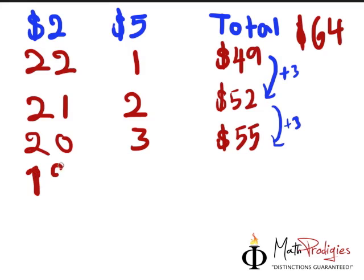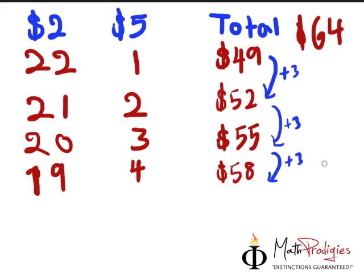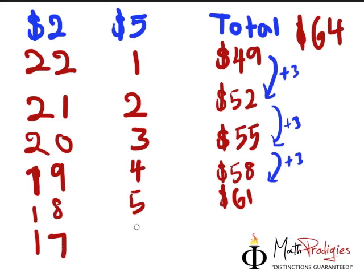So we have 19 $2-notes which gives you $38, and we have 4 $5-notes which gives us $20. So 38 plus 20 gives you $58. Let's check our pattern — yes, it is right, plus 3. So from now on, we just have to add 3. If we have 18 and 5, the answer will be plus 3, and you get 61. We are very close but not there yet. And finally, we have 17 and 6 — what's the answer? 64! That's what we are looking for.